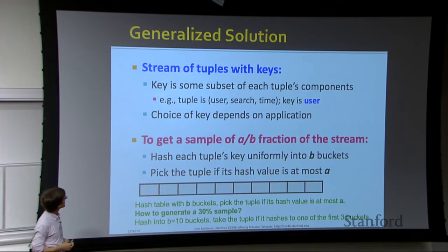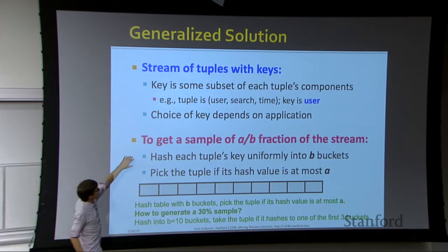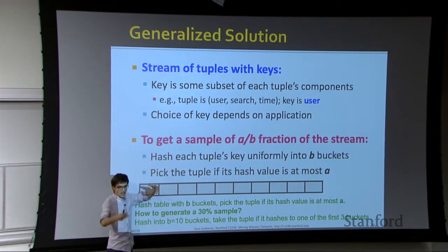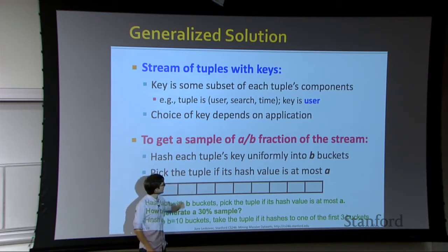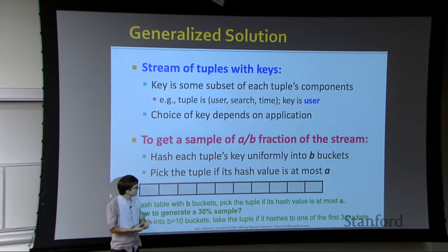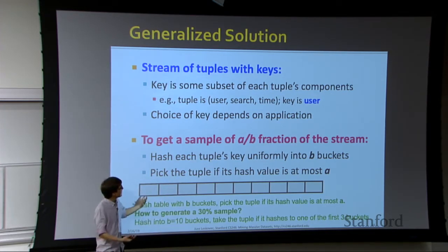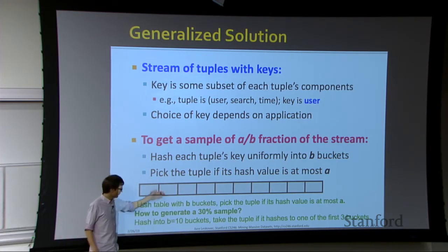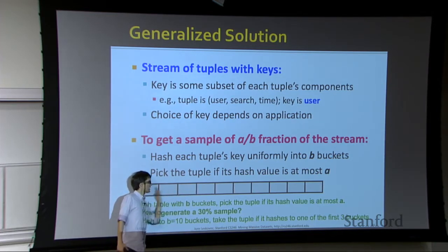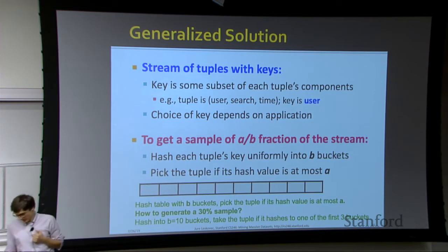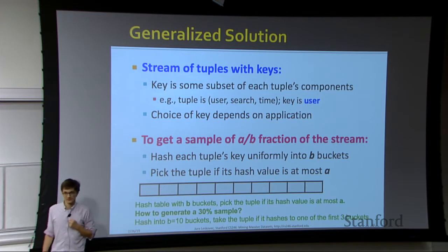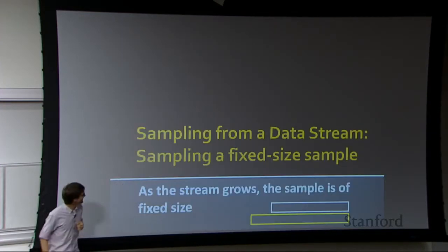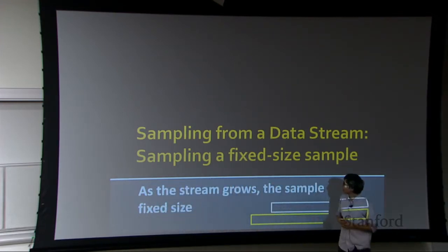To do an A/B fraction sample of the stream: hash each tuple of the keys over which you want to sample uniformly into B buckets, then pick the tuple if its hash value falls in the first A buckets. This saves an A/B fraction of the stream. For example, to generate a 30% sample, hash into 10 buckets and save elements that hash into one of the first three buckets.